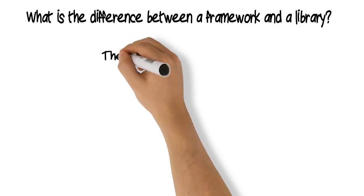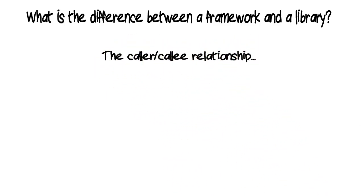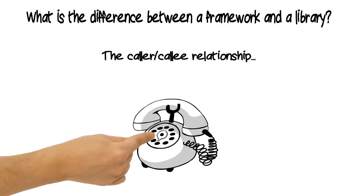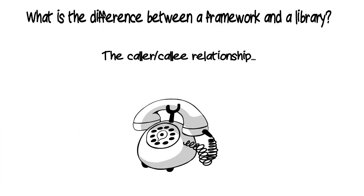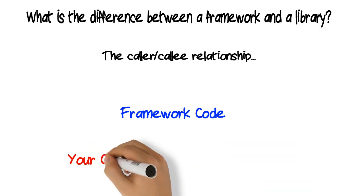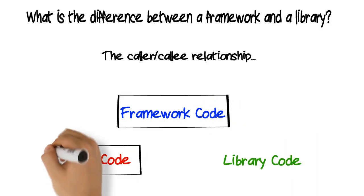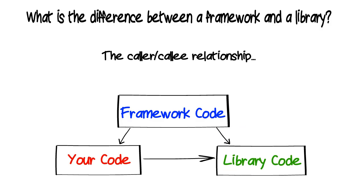The simple answer is that the distinguishing difference between a framework and a library is who calls whom. In other words, in a framework, the framework code calls on your code, and in a library, it is your code that makes calls to the library.